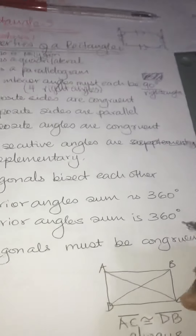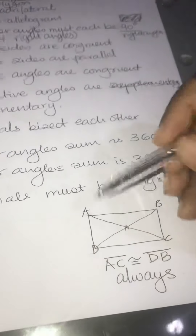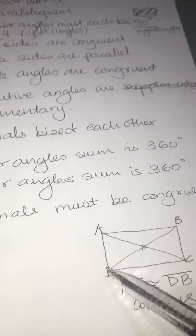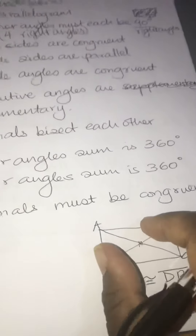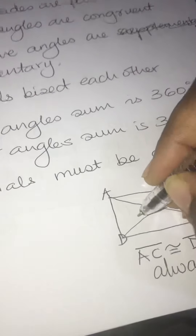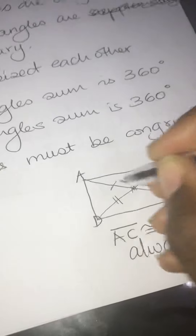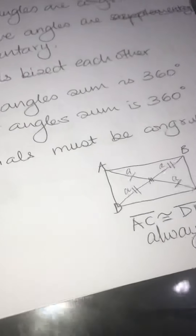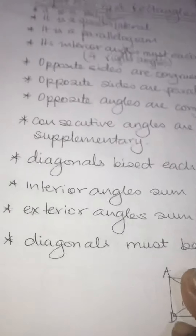The diagonals bisect each other. So if M is the midpoint, then AM equals MC, and DM equals MB — this segment is congruent to that segment. All four half-diagonal lengths from the center are congruent. The distance from center to each corner is the same — this only happens in a rectangle. So the diagonals bisect each other.